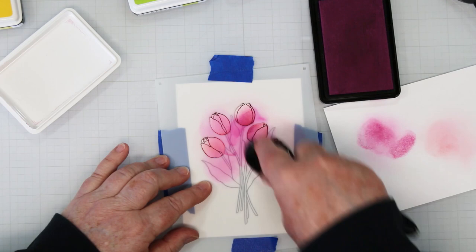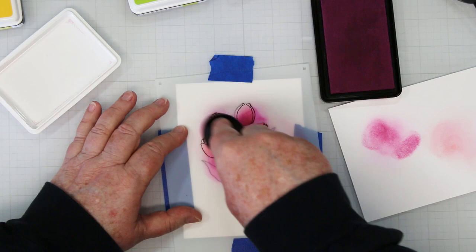I just want to add this darker color to the bottom of the tulips, not all the way over the top. I've also left the very tips of the top of the tulips white. I really like that contrast.